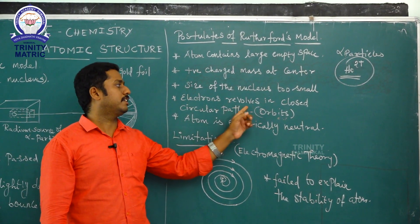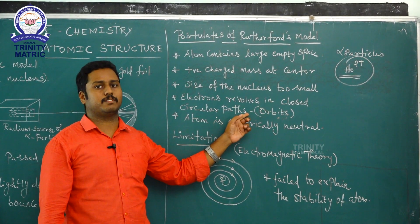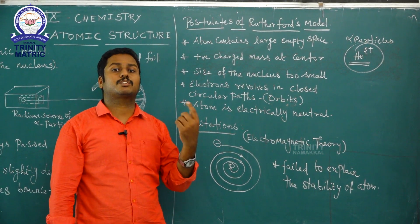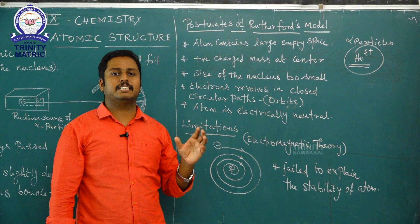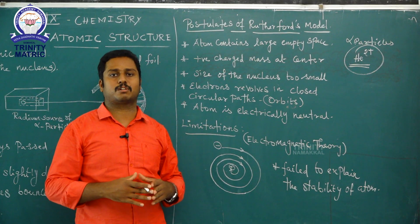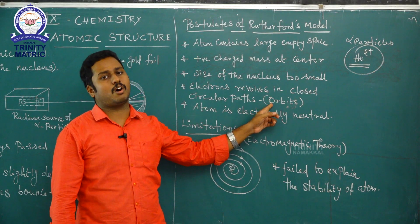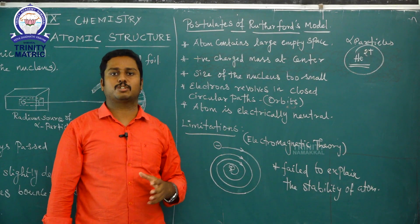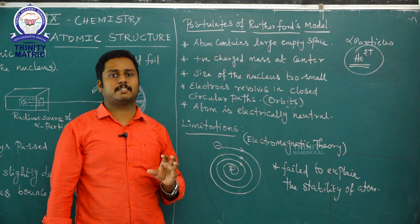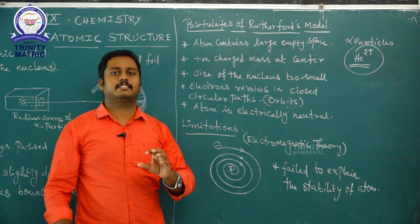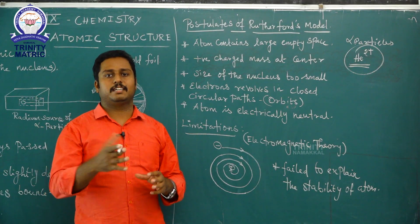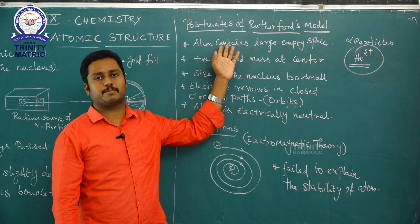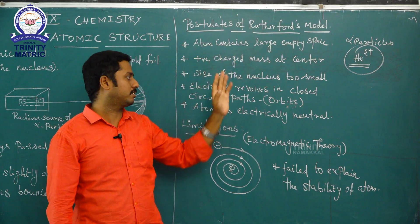The fourth postulate: electrons revolve around the nucleus in closed circular paths known as orbits or orbitals. This is why the Rutherford model is otherwise known as the planetary model or solar system model — the nucleus is like the sun and the electrons are like the planets.